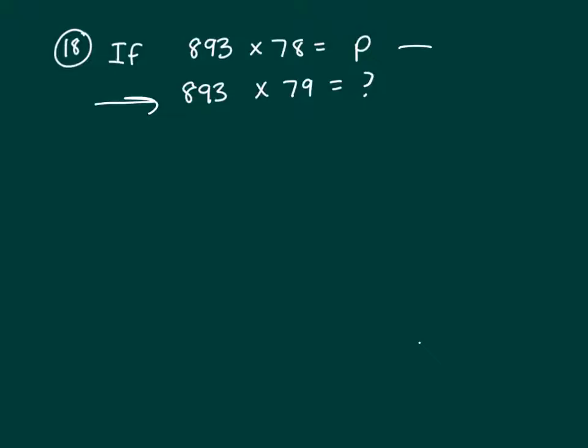We're trying to figure this out. We know the top line, and we know all of our answers have got a P in them. And we're trying to find 893 times 79, which doesn't have a P in it.